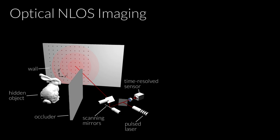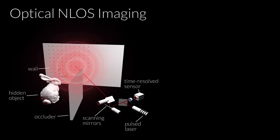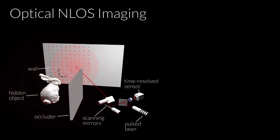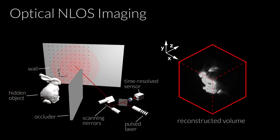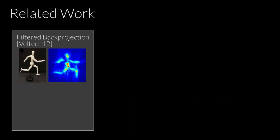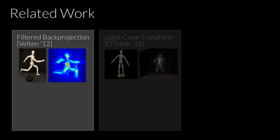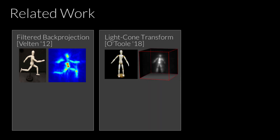Time-of-flight based non-line-of-sight imaging systems use pulsed lasers and time-resolved sensors to illuminate a position on a surface, probe the indirect light which returns from a hidden object, and recover 3D geometry. Recent approaches to solving this challenging inverse problem include filtered back projection and the light cone transform. However, these approaches are either slow, assume a hidden object with Lambertian reflectance, or may not account for non-planar scanning surfaces or non-confocal measurements.